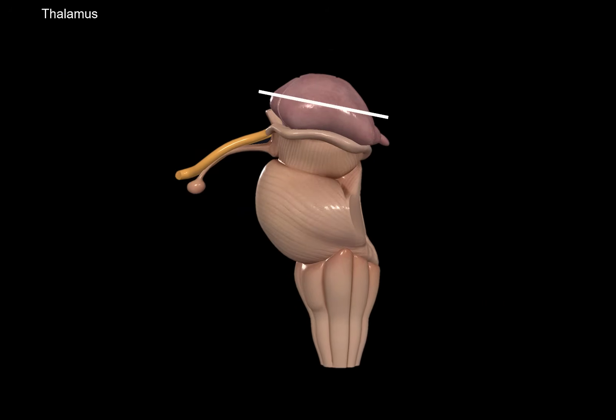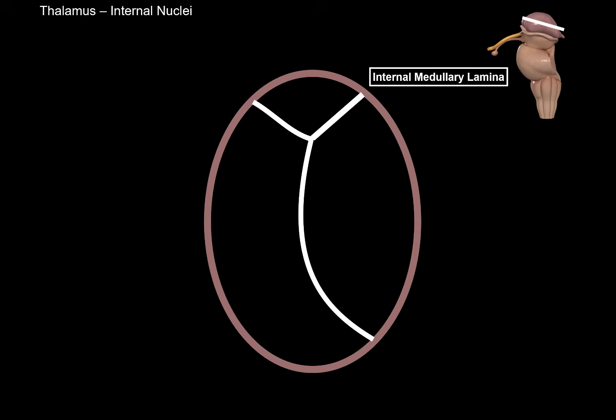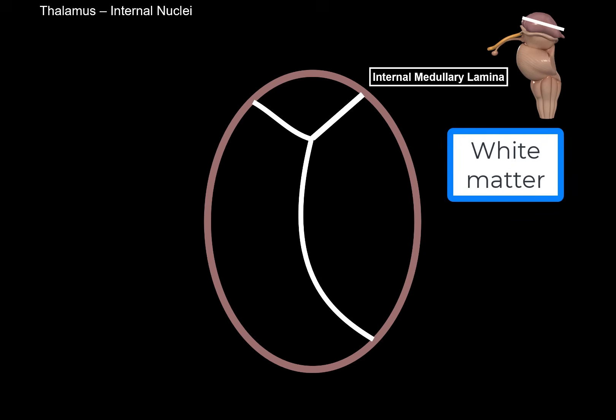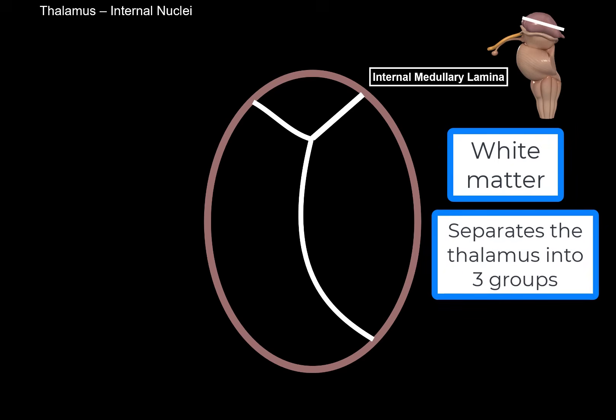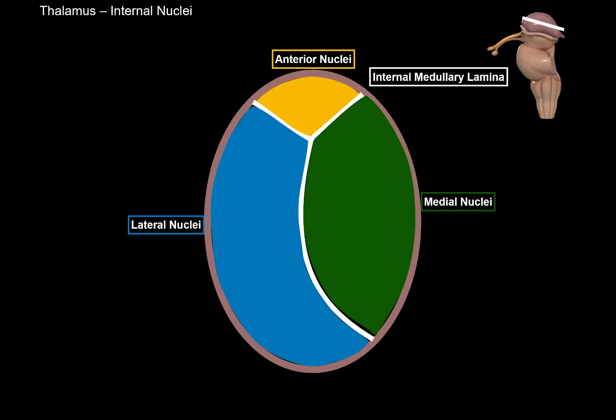Slicing the thalamus and viewing from a superior perspective, we see it's divided into three different nuclear groups by a Y-shaped structure called the internal medullary lamina, sometimes called the medial medullary lamina. This white matter structure separates the thalamus into three groups: the anterior group of nuclei within the anterior tubercle, the medial group of nuclei, and the lateral group of nuclei.